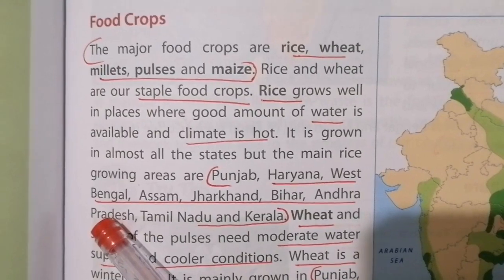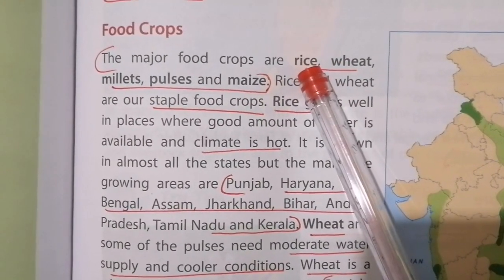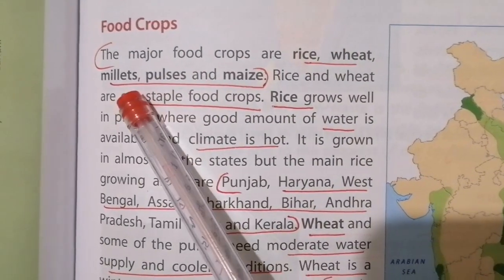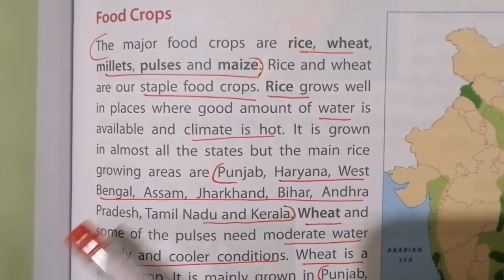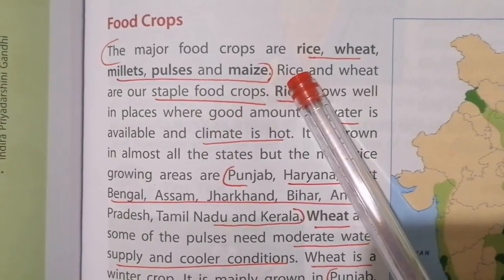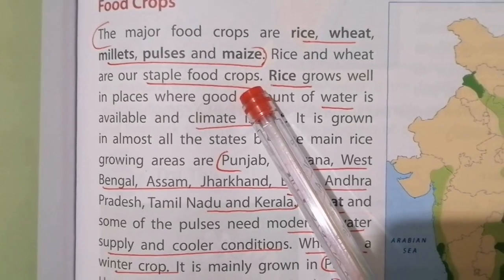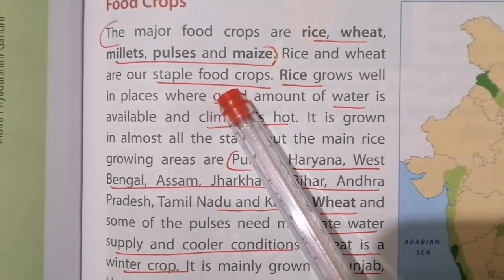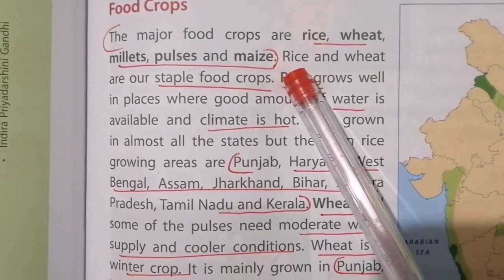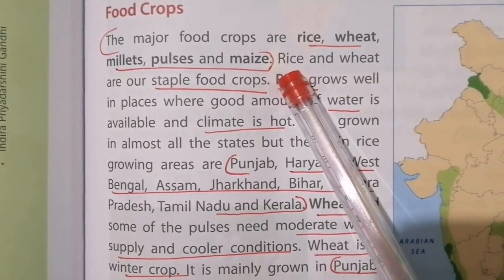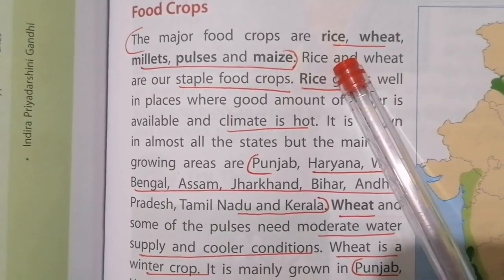Repeat with me children — the major food crops are rice, wheat, millet, pulses, and maize. Out of these, rice and wheat are our staple food crops, meaning we consume them in large quantities. We have rice in the afternoon as well as at night.